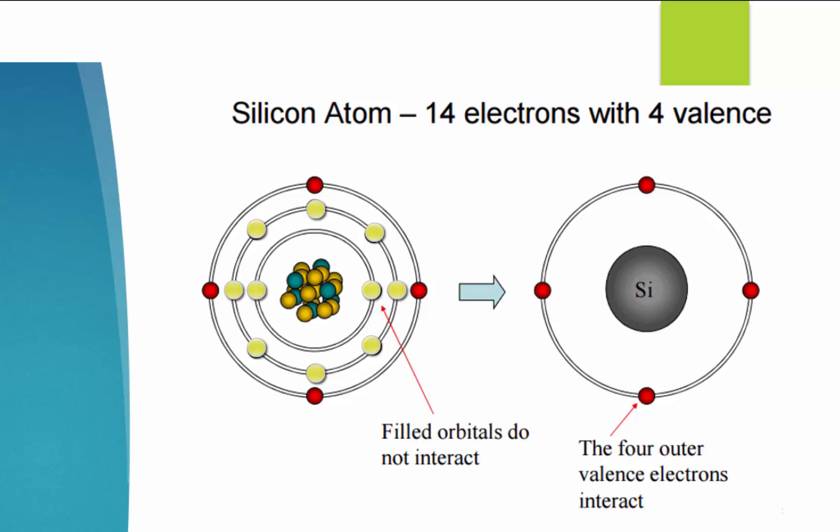10 of them are tightly bound to the nucleus and normally don't involve in chemical reactions or atom-to-atom interactions. But the outermost four electrons are heavily involved and are called the valence electrons.